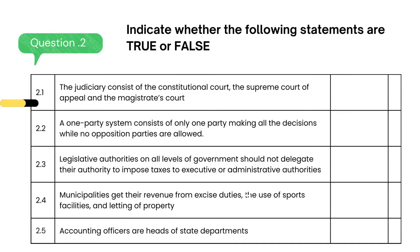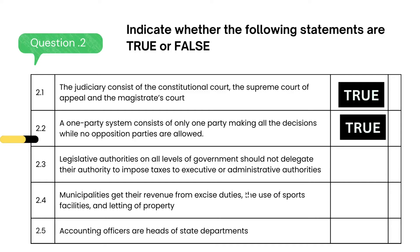The judiciary consists of the Constitutional Court, the Supreme Court of Appeal, and the Magistrates Court — the answer is true. A one-party system consists of only one party making all the decisions while no opposition parties are allowed — the answer is true.